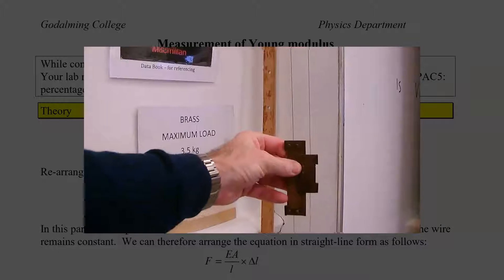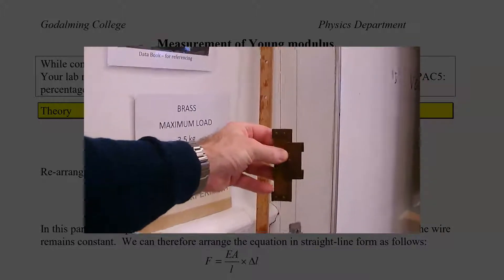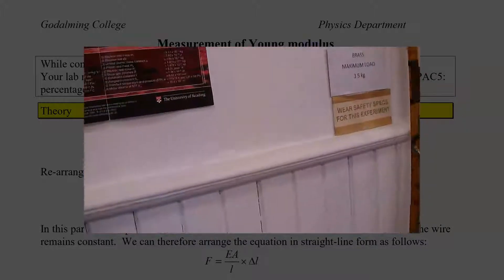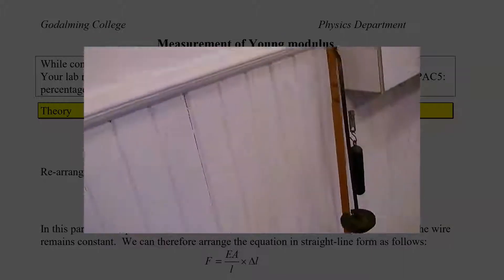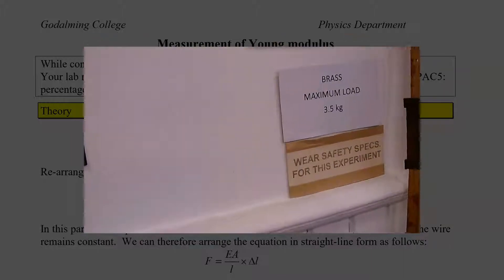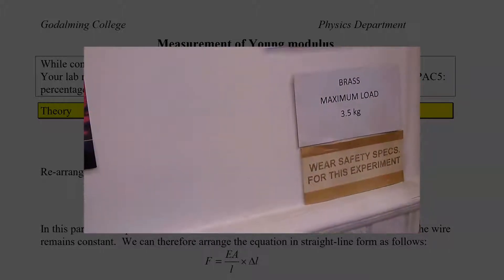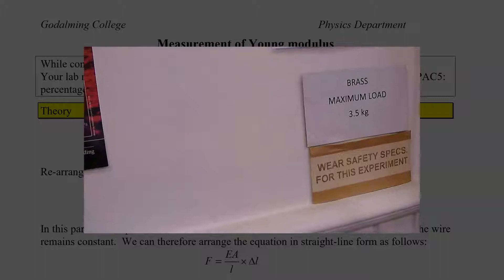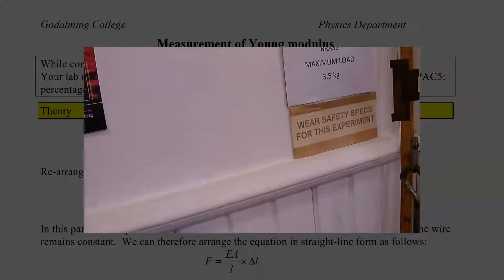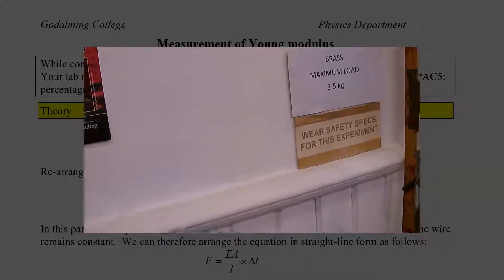You are going to add half kilo masses between one and the maximum load of three and a half kilos, and that is the total maximum load including the mass hanger. In that respect, it is a very simple experiment.